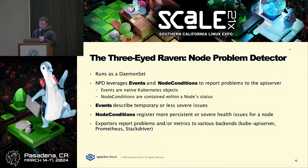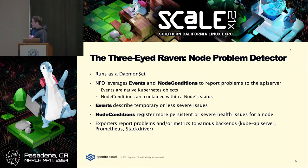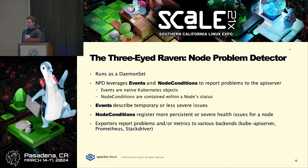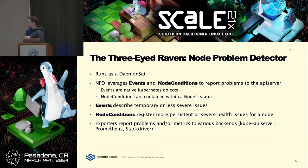The first hero is NPD — the Node Problem Detector. Also within the Kubernetes project, open source, and seeing more traction recently. You can install it as a daemon set, or run it directly on the nodes (more complicated but not subject to container runtime availability). It submits events and node conditions to the API server and can also export metrics. The default use case is to export events and node conditions to the API server, but you can also export metrics to Stackdriver and Prometheus.